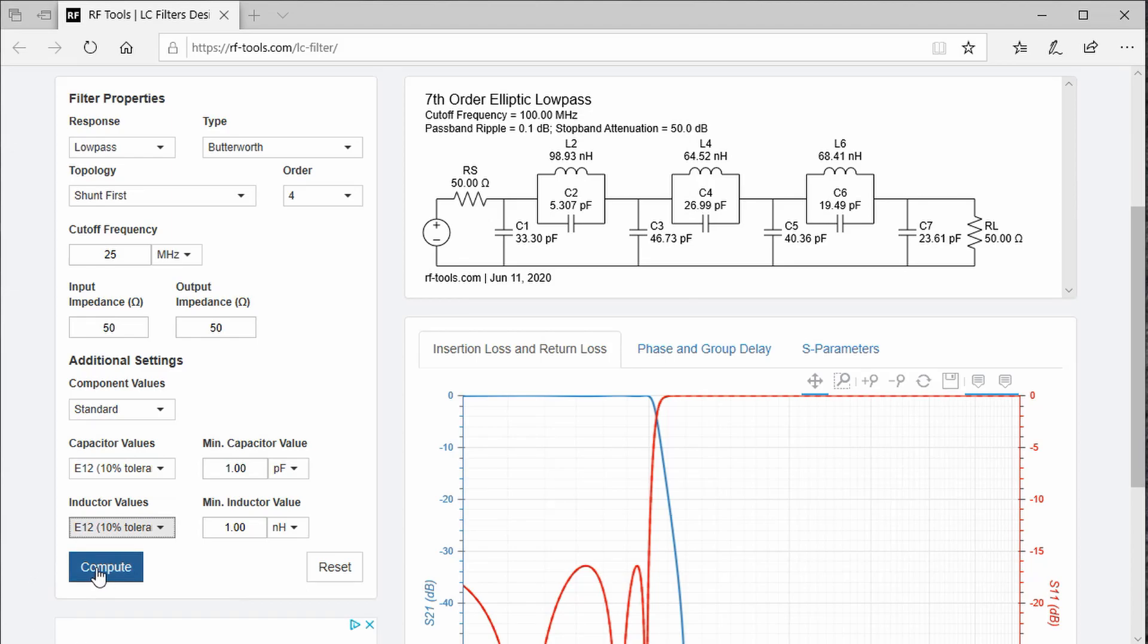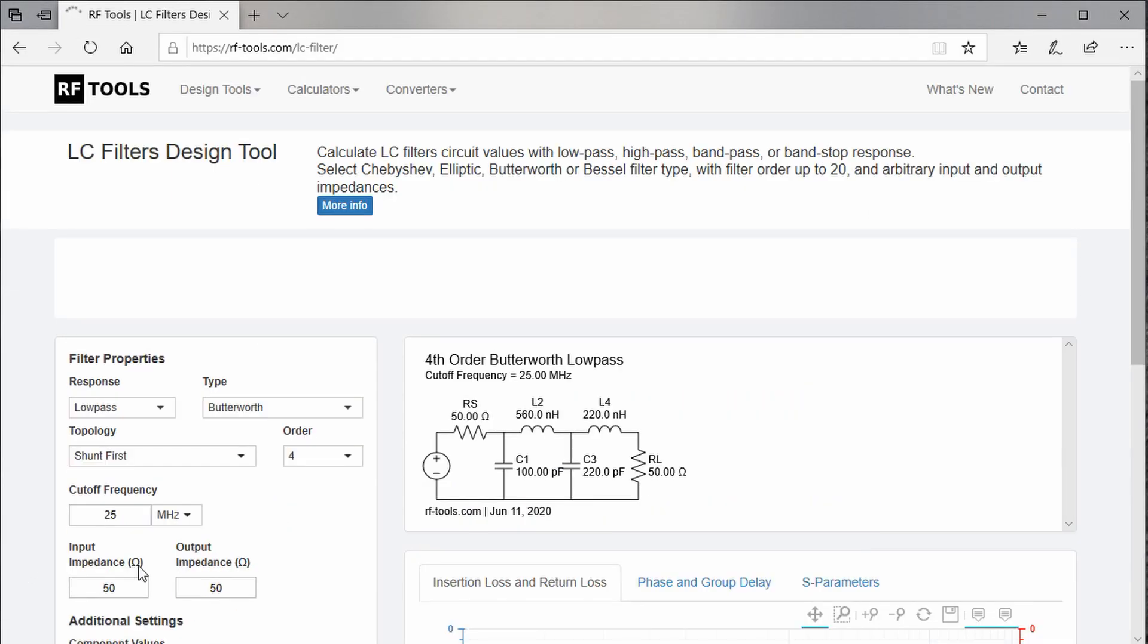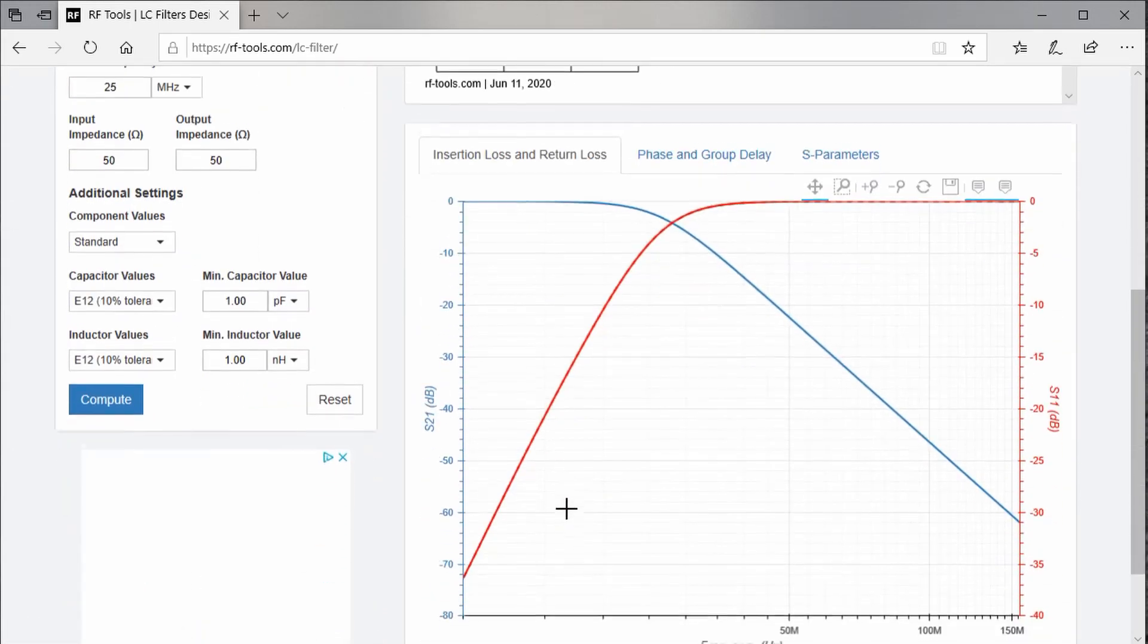Now we press Compute and get a beautiful drawing of our filter and also this curve. Relevant for us is S21, which is the attenuation between input and output. It is around 2.5 dB at 25MHz and 36 dB at 75MHz. The 50MHz harmonics anyway was smaller and therefore needs a little less attenuation. With this filter, we should get a decent sine wave.